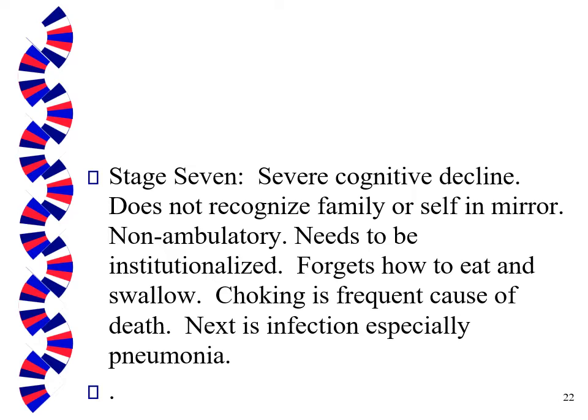Stage seven is severe cognitive decline — they not only don't recognize family, they don't even recognize themselves in the mirror. They're not able to walk and are usually just sitting in a stupor. The way they often die is they forget how to swallow and aspirate their food, or they choke, or food goes down the wrong way into the lungs and turns into pneumonia. It's not a comfortable way to die.